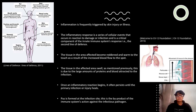The inflammatory response is a series of cellular events that occur in reaction to damage or infection and is a critical component of the innate immune system. The following are the primary symptoms of the inflammatory response. The tissue in the affected area becomes red and warm to the touch as a result of increased blood flow to the spot.